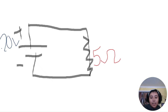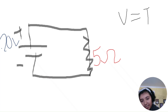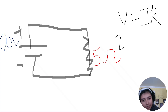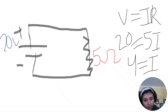then what is the current? To find the current, you use the formula V equals I R. So 20 equals 5 I, which gives us I equals 4. So the current is 4 amps.